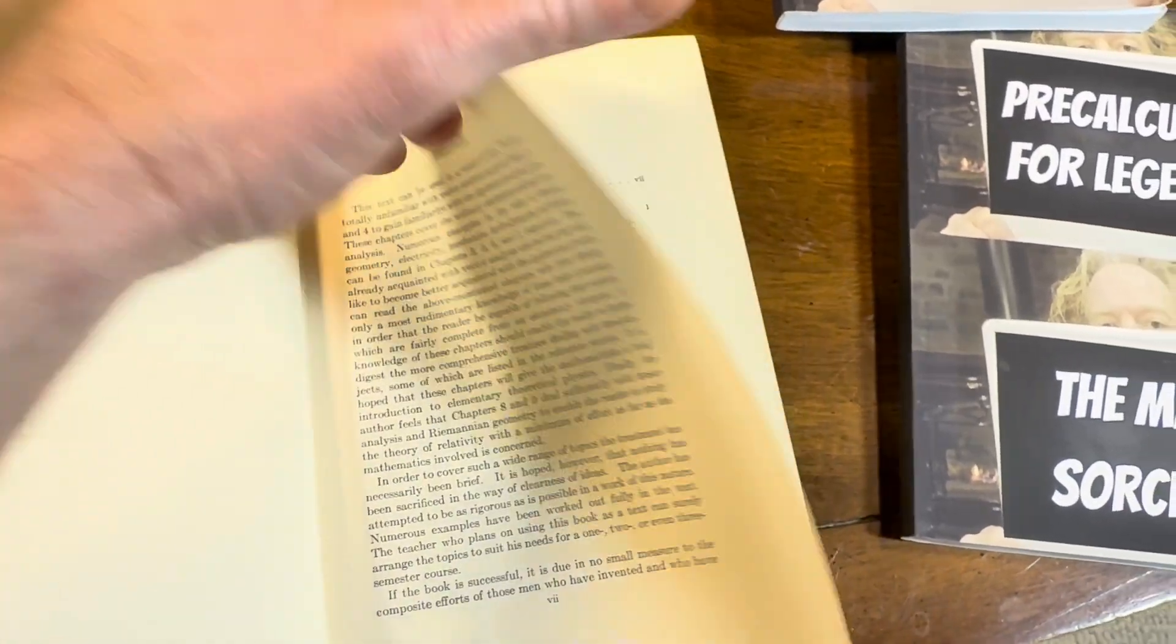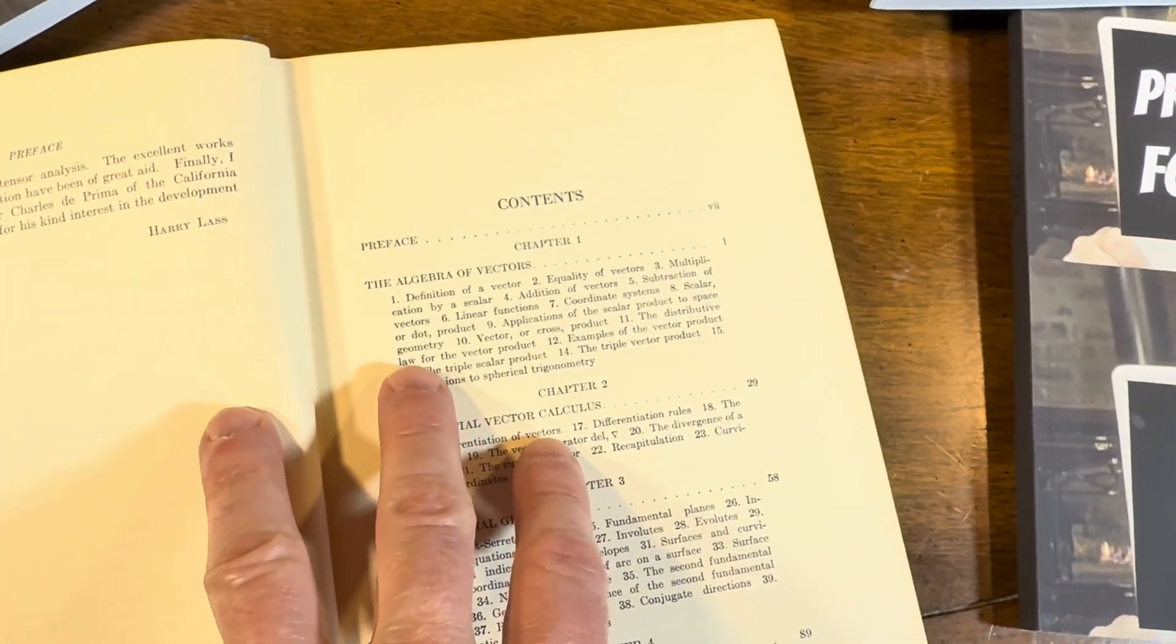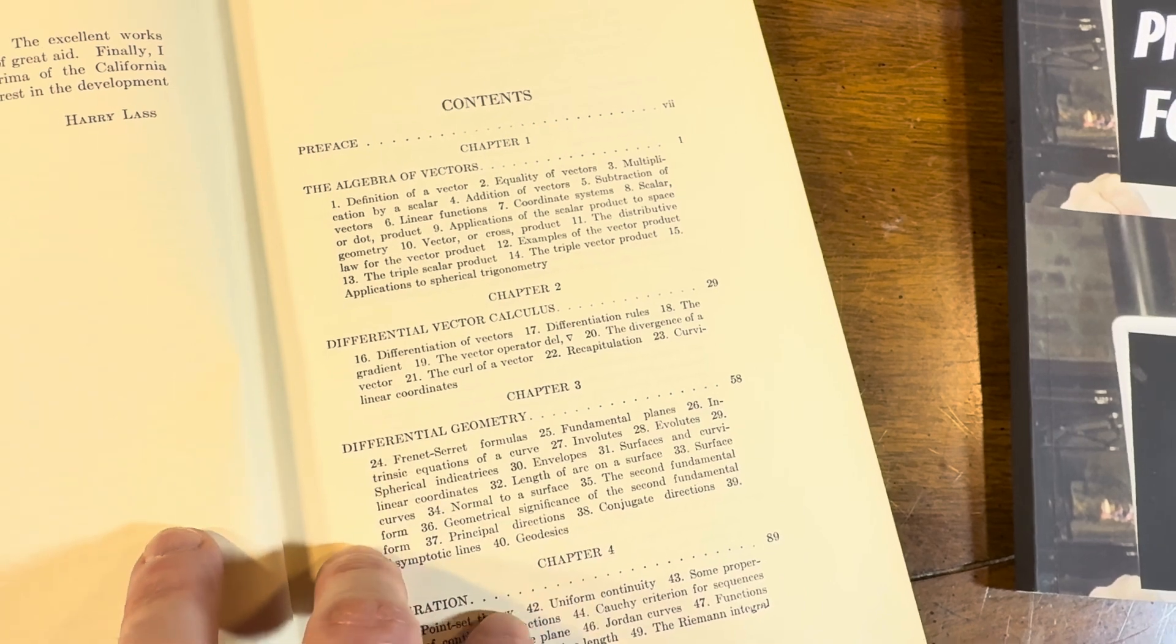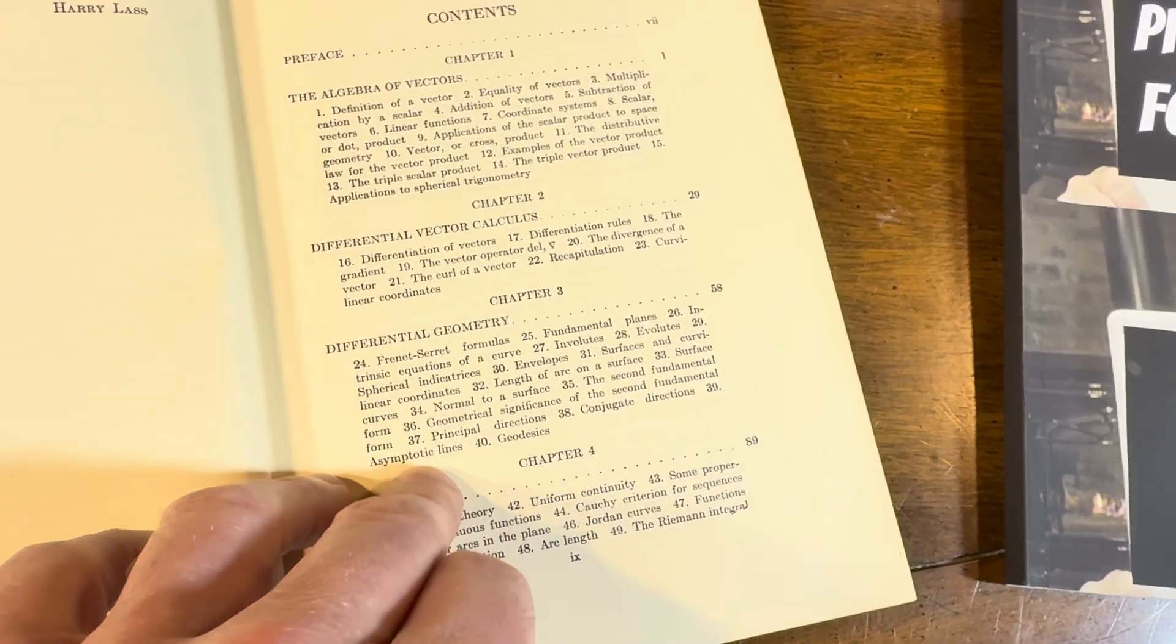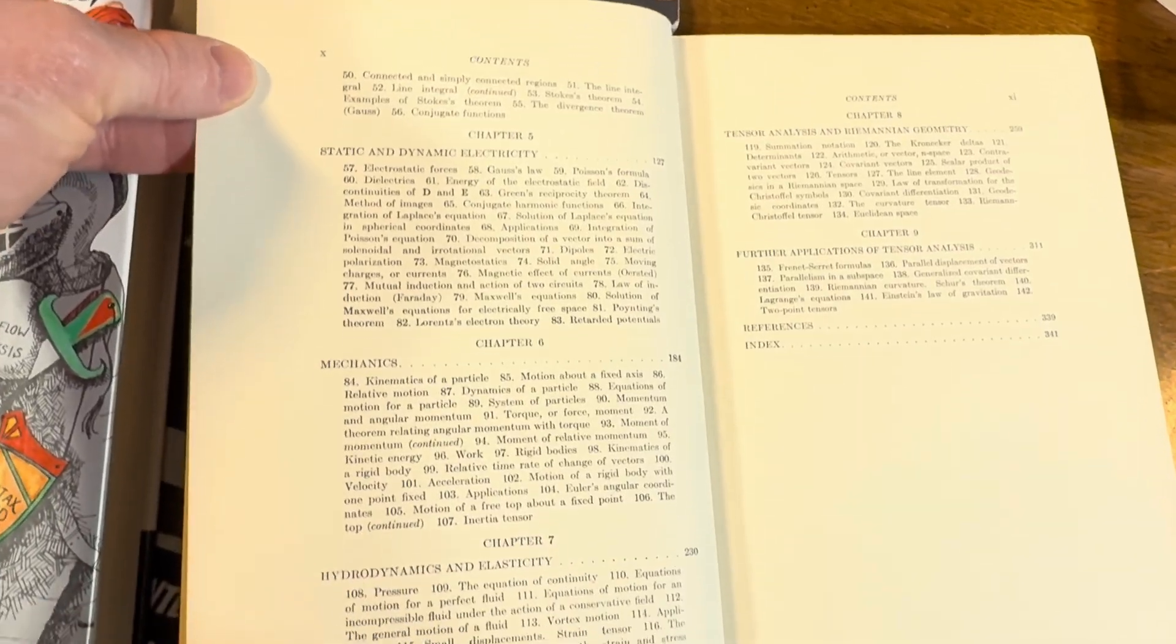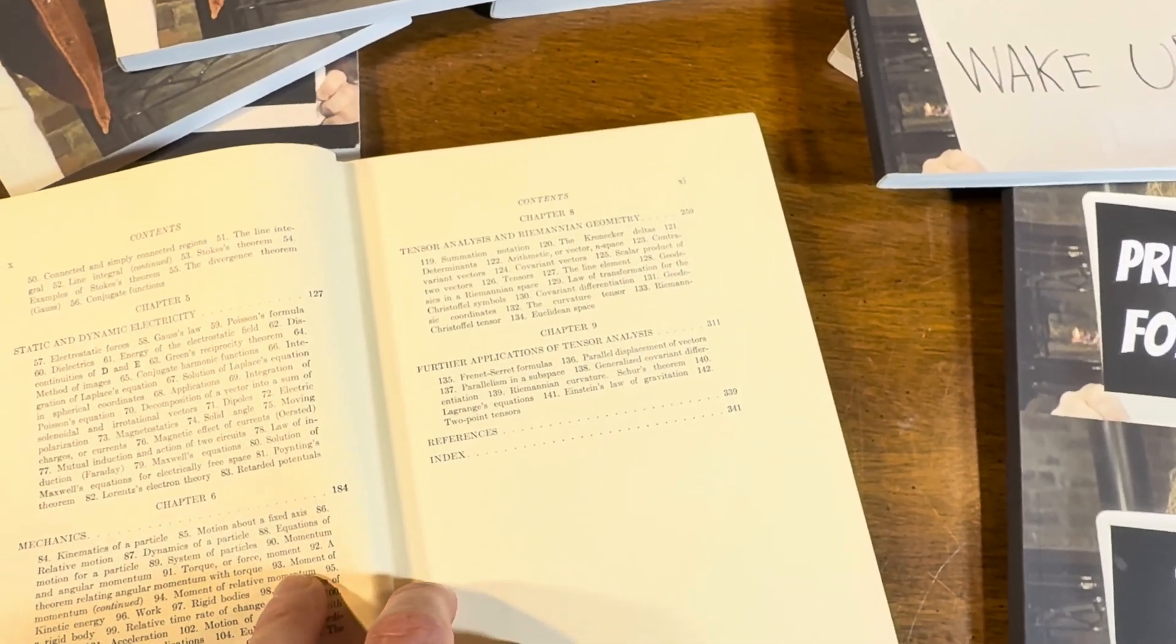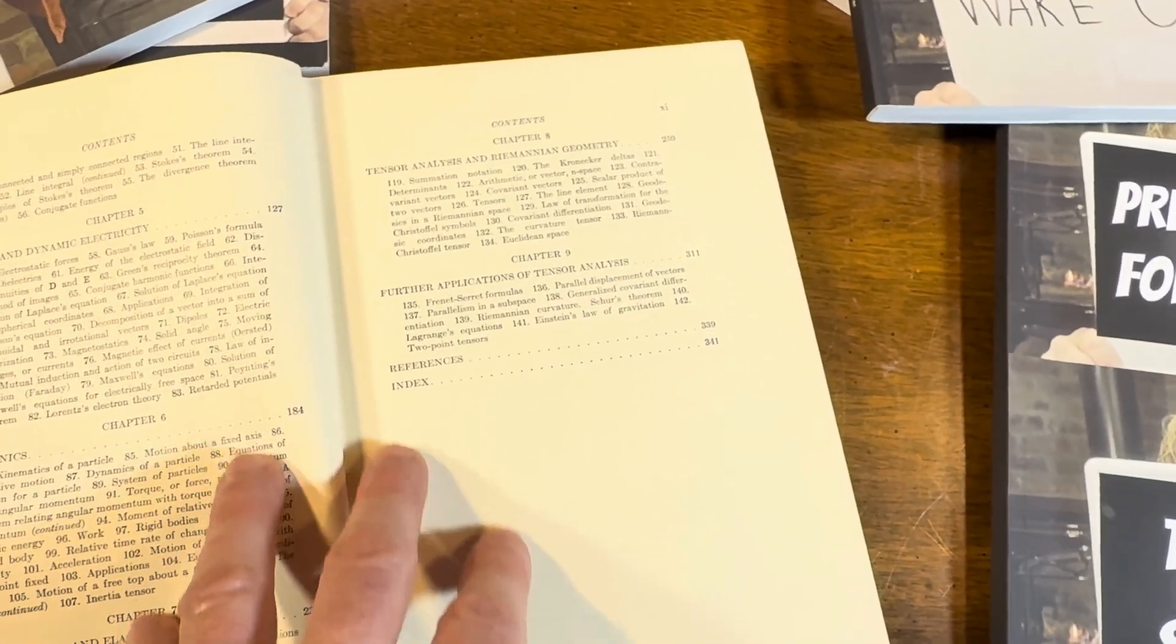Let's take a look at the table of contents. Starts with the algebra of vectors and then differential vector calculus. So some of this stuff you do in calculus. And here we get to differential geometry. Integrations, more advanced topics. Static and dynamic electricity. Mechanics, hydrodynamics, and elasticity. Tensor analysis and Riemannian geometry. I can never say that correctly. Further applications of tensor analysis.